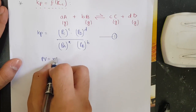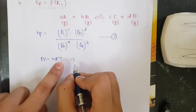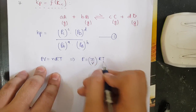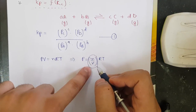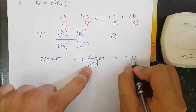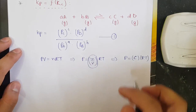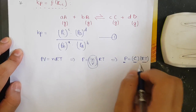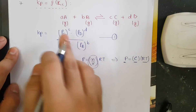From the ideal gas law, PV = nRT. Rearranging, P = (n/V)·R·T. Since n/V is concentration, pressure can be written as concentration times R times T. This relation will be used to substitute partial pressures in terms of concentration.